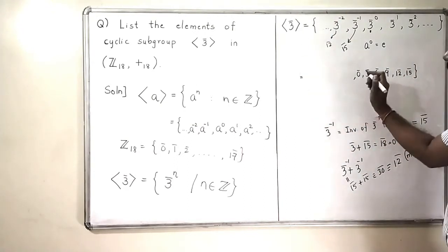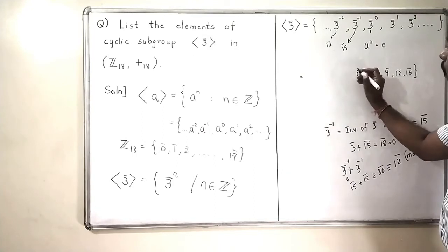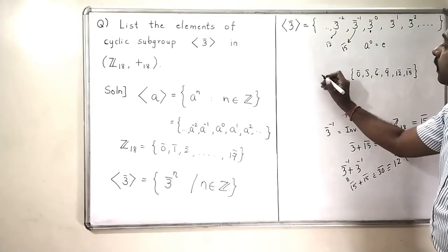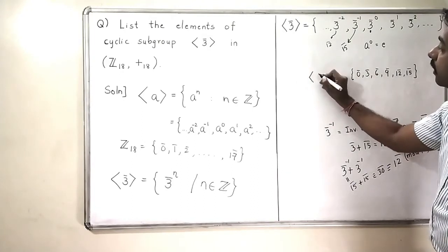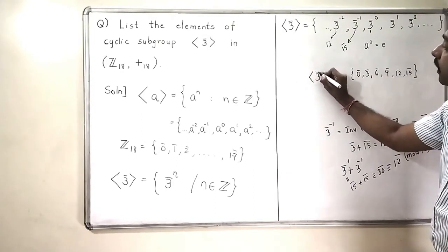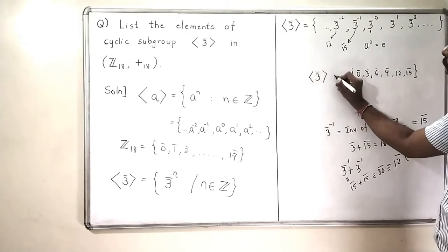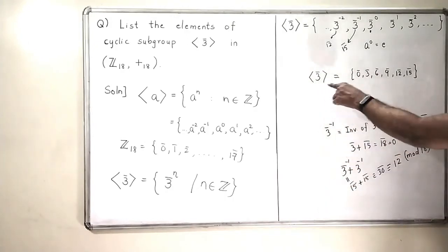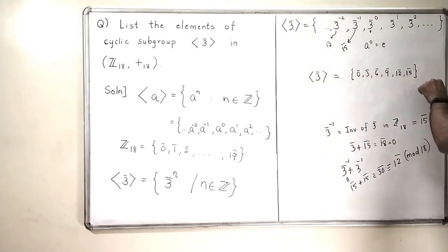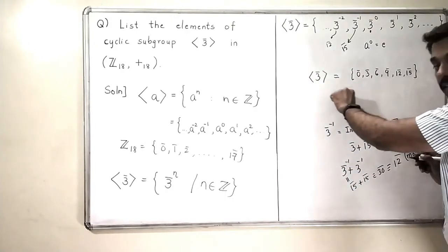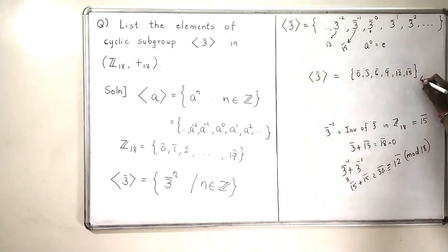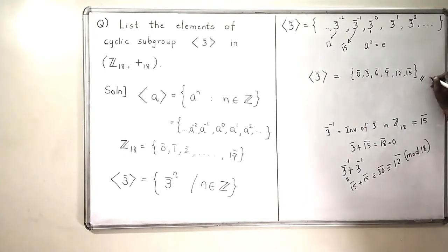So this means the set is now complete, and this is the answer: the cyclic subgroup generated by 3̄ in Z₁₈ is the set { 0̄, 3̄, 6̄, 9̄, 12̄, 15̄ }. With this, the problem gets over.